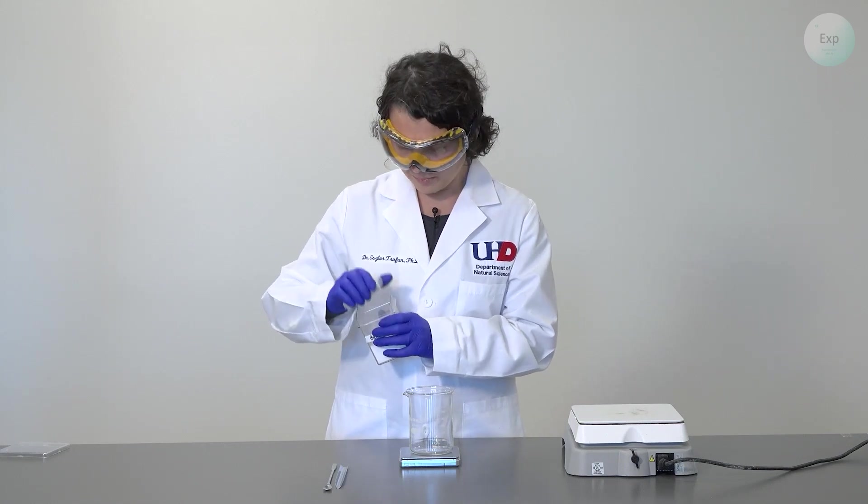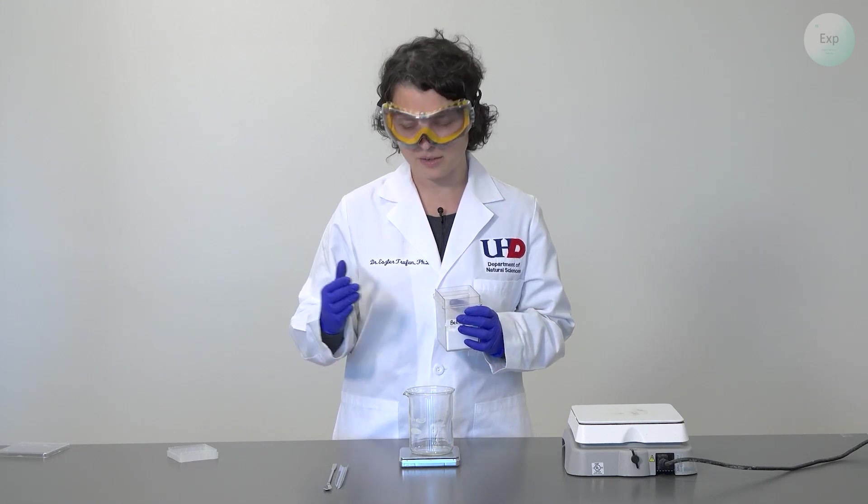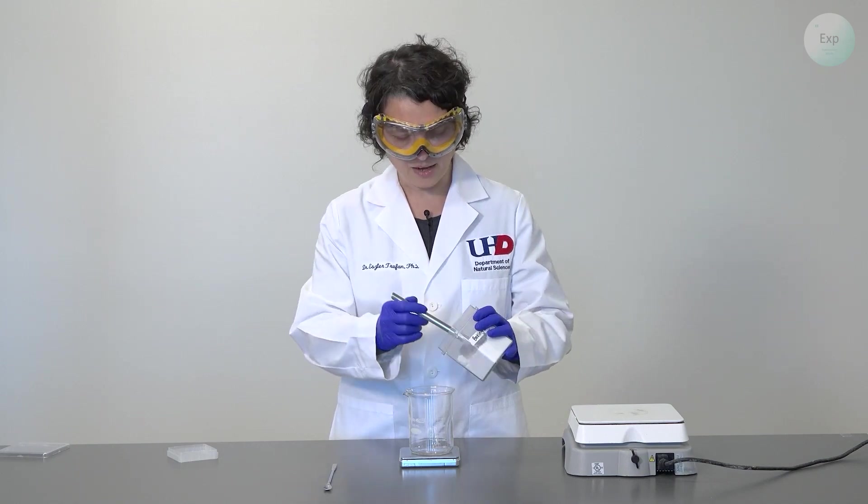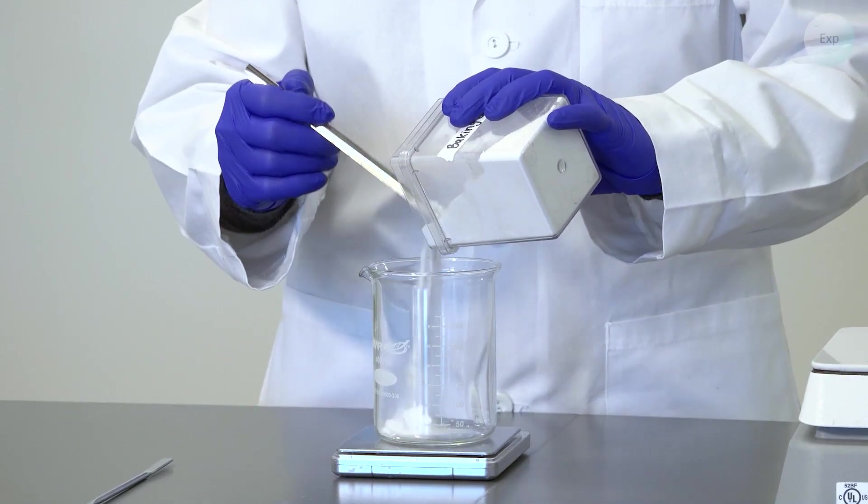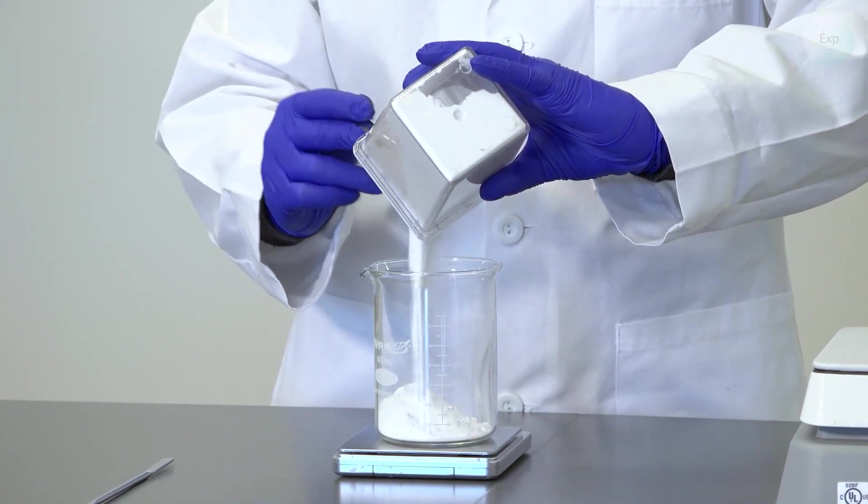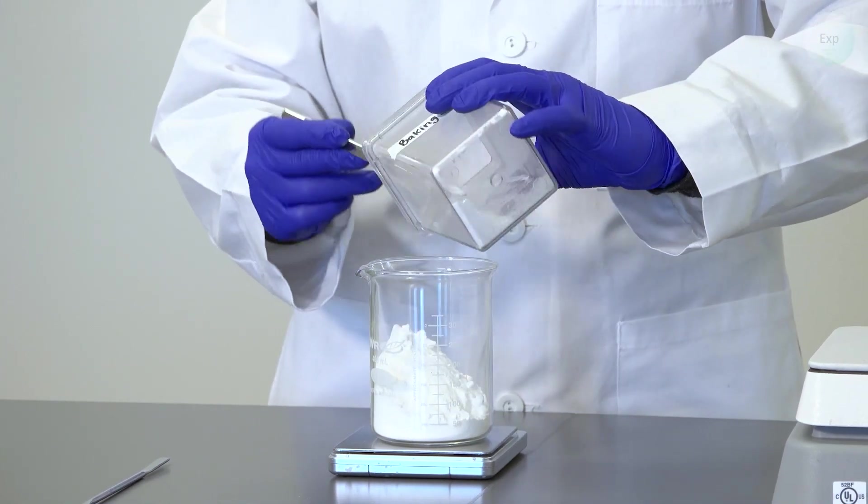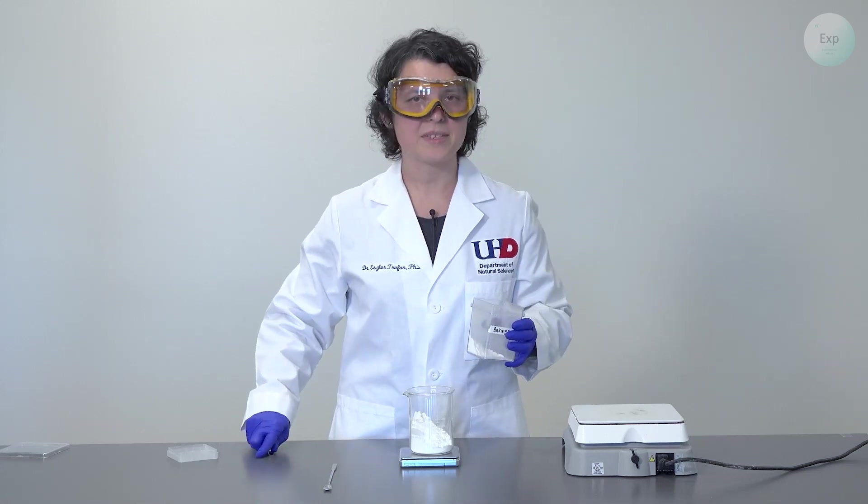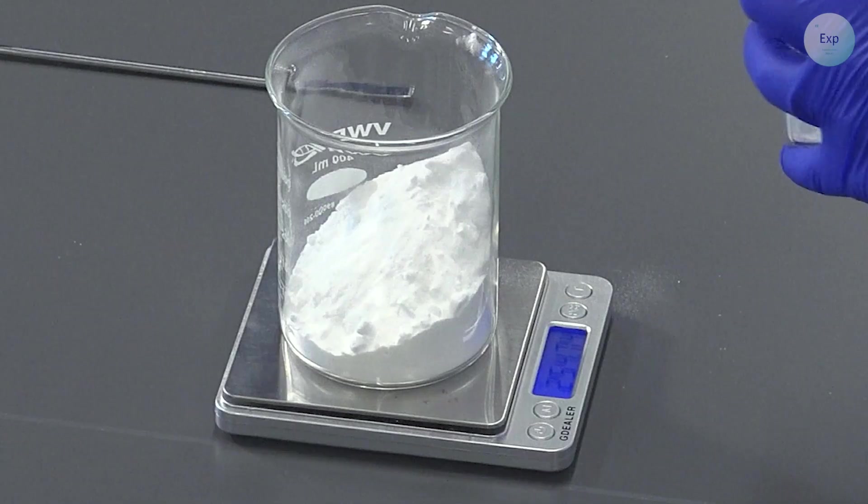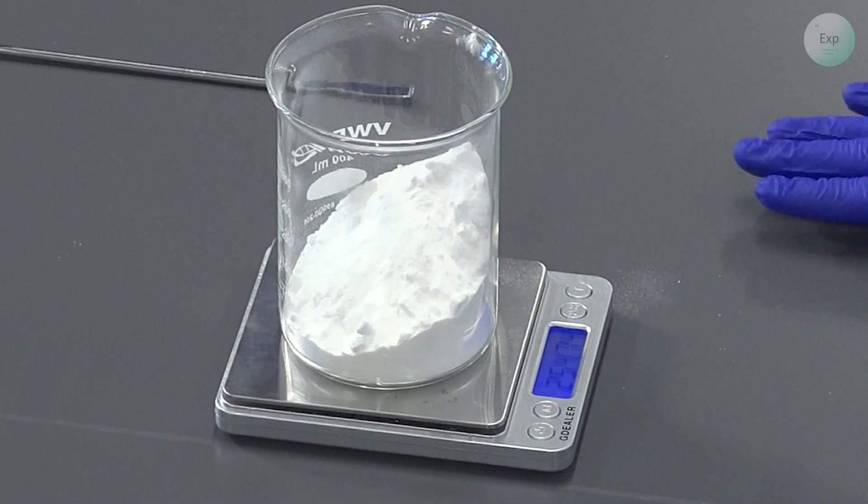Next I'm going to place anywhere between 100 to 150 grams of baking soda in the beaker. Now I can do that using a scrupula or I can simply transfer it because this is a large amount. I will do a combination of the two. Once I'm satisfied with the amount of baking soda that I added to the beaker, I'm going to record the mass of my beaker and baking soda combined. In my case this is 254.74 grams.